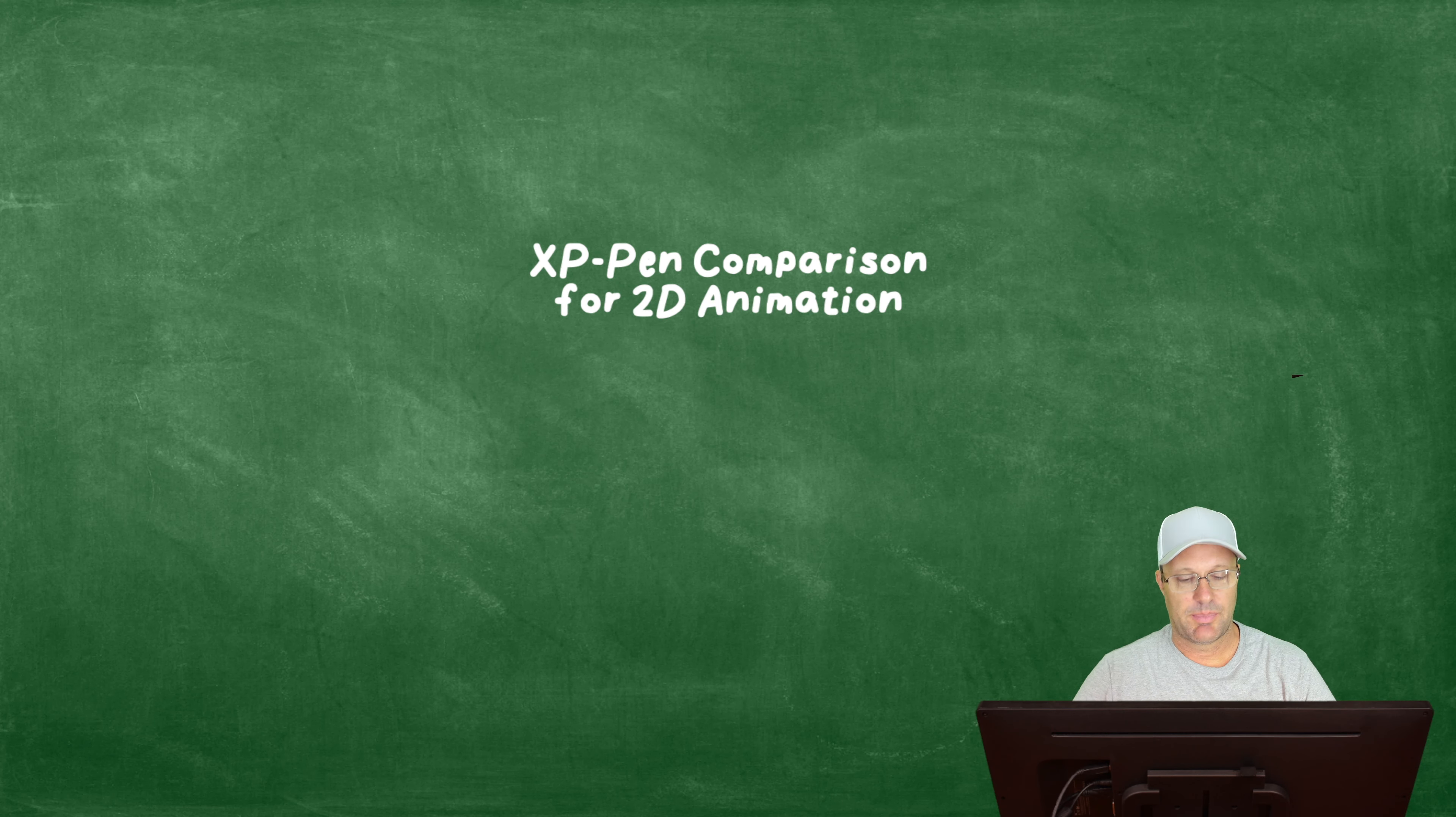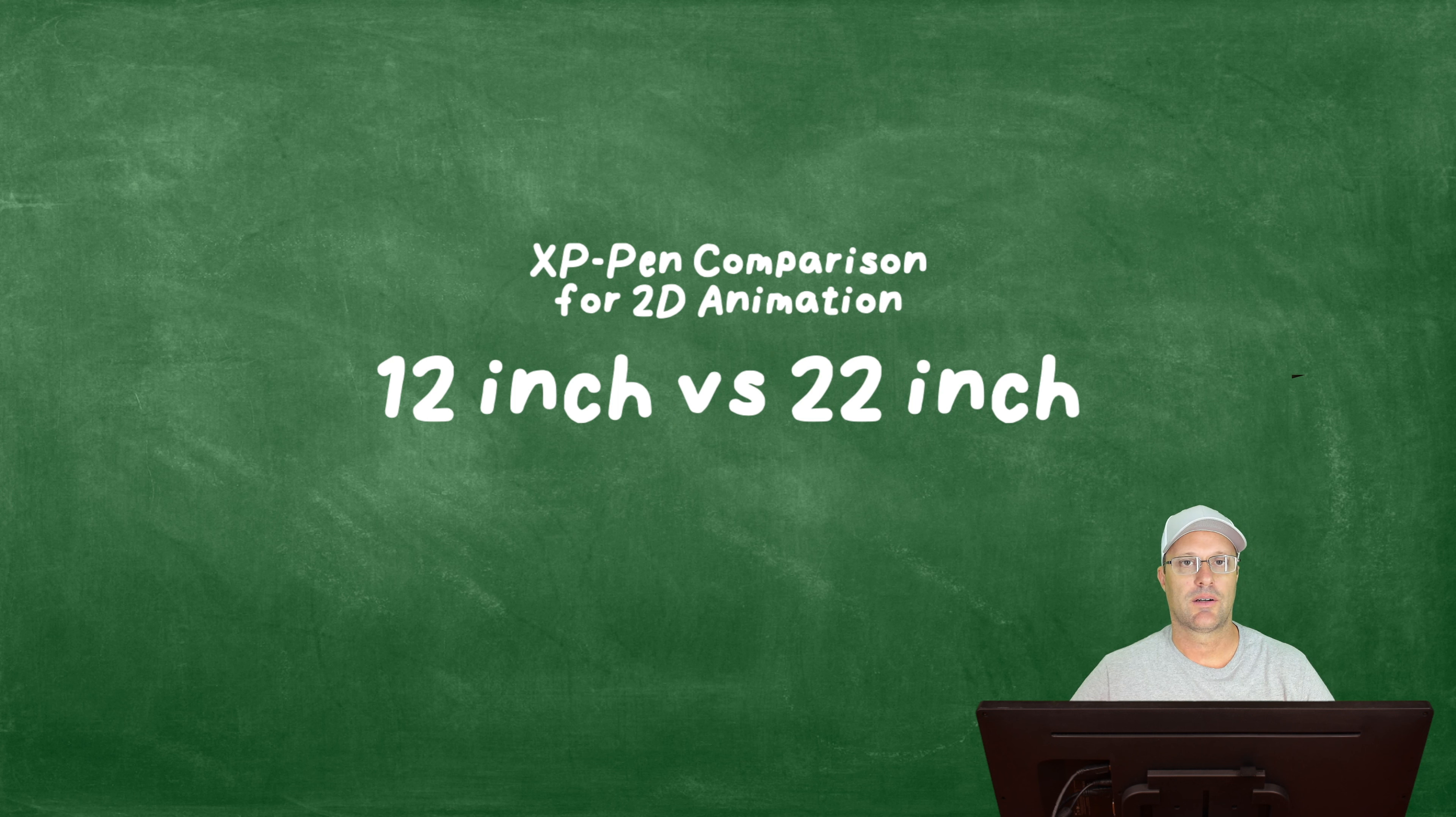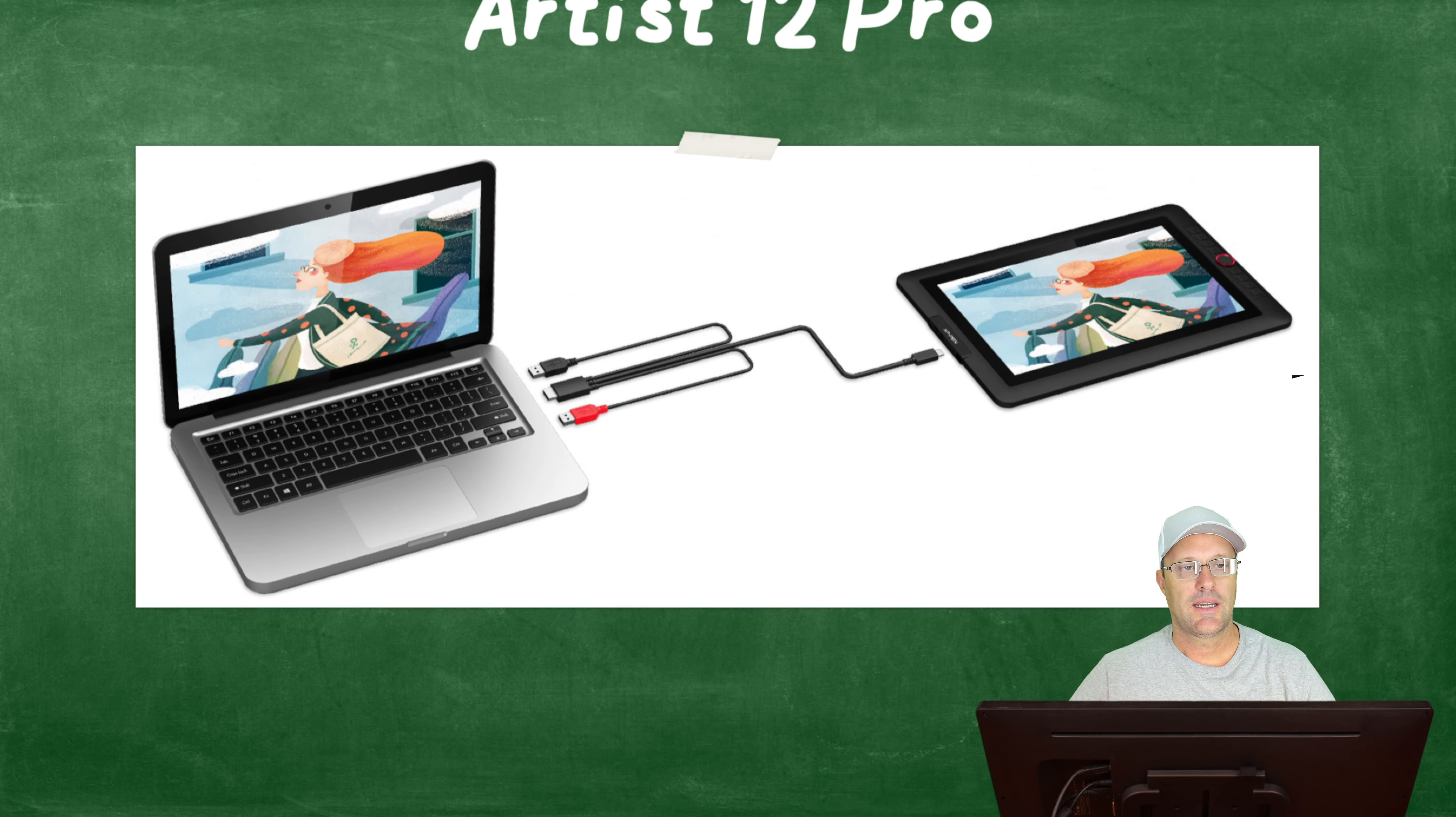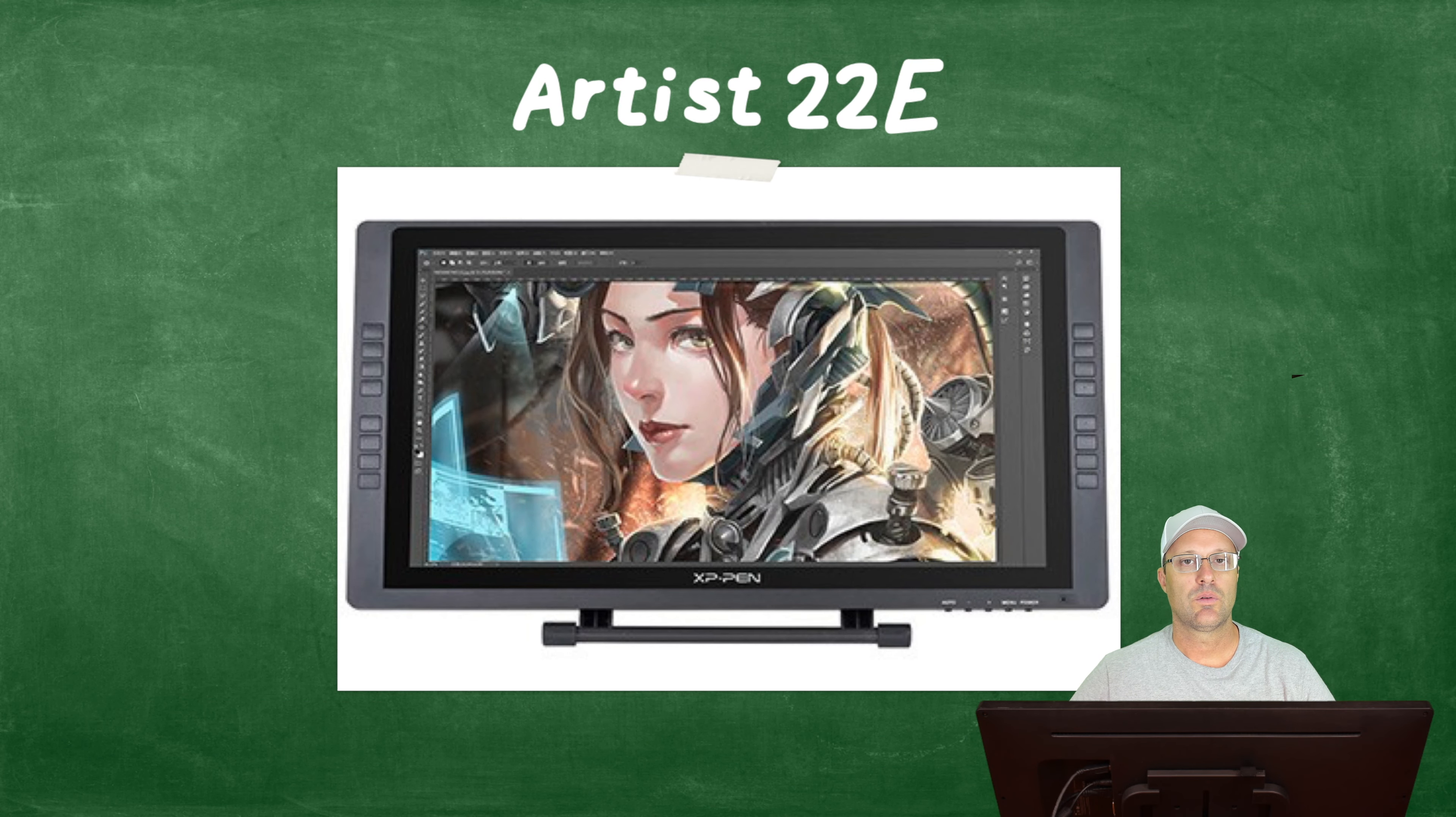So like I said, we're gonna be comparing XP-Pen's two different models specifically for use in 2D animation. Those two models are the 12 inch and the 22 inch. Let's take a look at the Artist 12 Pro, which is what I've been using with my work computer, and the XP-Pen Artist 22E, which is an older model that I bought in 2015. I actually use that for animating pretty much every day as well.